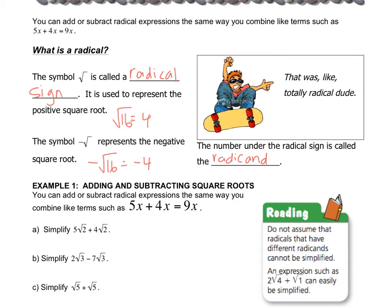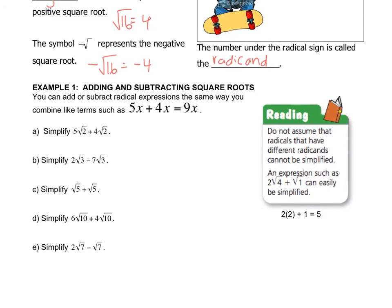The way that you add radical expressions is just like how you would add variables. Treat the radical as you would treat a variable — it's not a variable, but it operates the same way when you're adding and subtracting. So 5 radical 2 plus 4 radical 2 is going to be 9 radical 2, just like 5x plus 4x equals 9x.